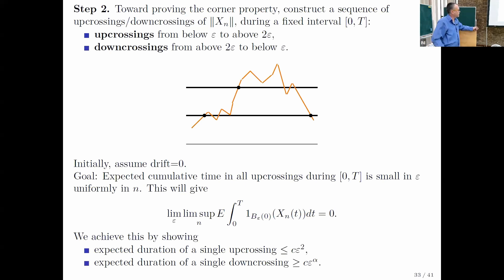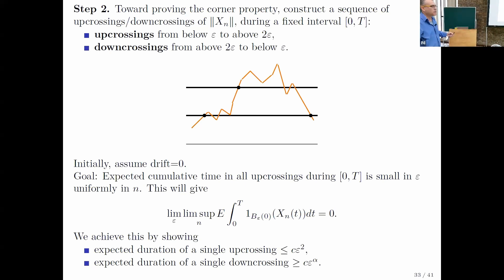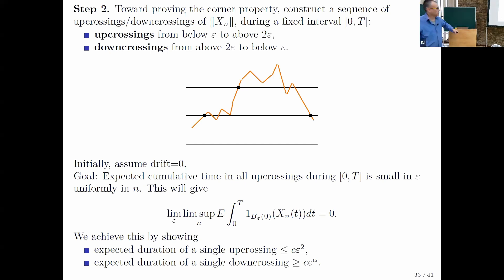We achieve this by showing the expected duration of a single up-crossing scales like epsilon squared at most, and the expected duration of a single down-crossing scales at least like epsilon to the alpha. Since alpha is less than 2, the up-crossing duration is negligible relative to the down-crossing duration. These are actually the correct scales. This is one way of understanding the argument. It breaks down when alpha is 2 or higher — the up-crossings are no longer negligible, which is why in Varadhan-Williams this is the borderline case between existence and a process that gets stuck at the corner.